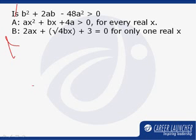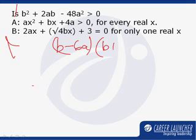In this question, if the given b² + 2ab - 48a² is greater than 0, we get (b - 6a) into (b + 8a) is greater than 0.